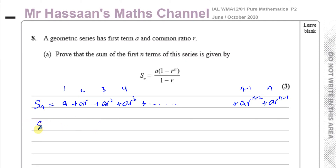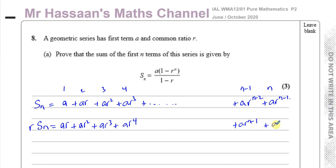The second thing I'm going to do is write the sum again, but this time multiply each term by R. So RSₙ equals: instead of A I write AR, instead of AR I write AR², then AR³, AR⁴, and so on, up to AR^(n-1), and the last term will be AR^n. Every term has been multiplied by R, so the powers are increased by 1.